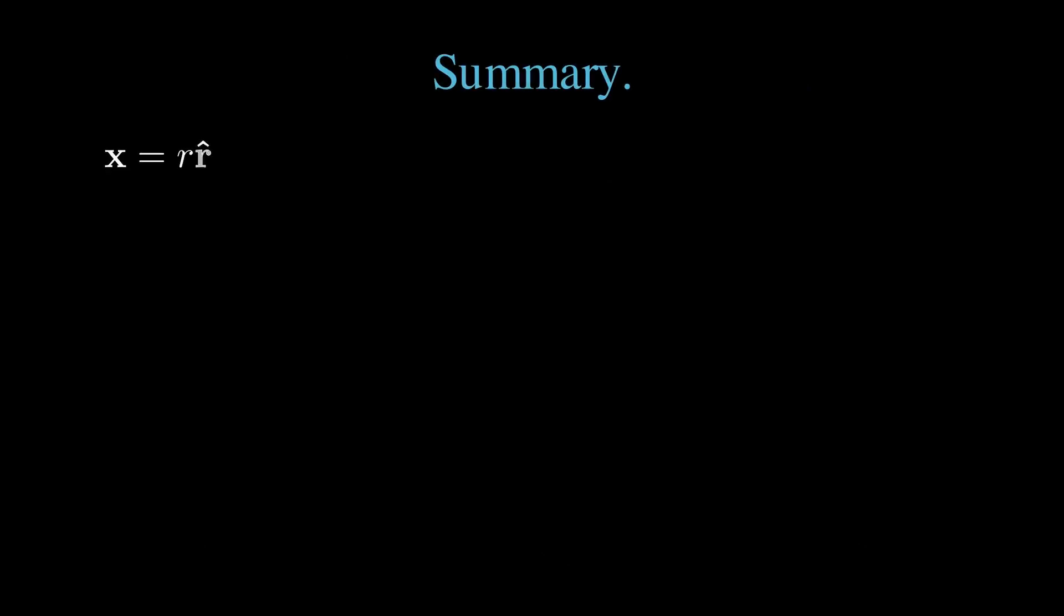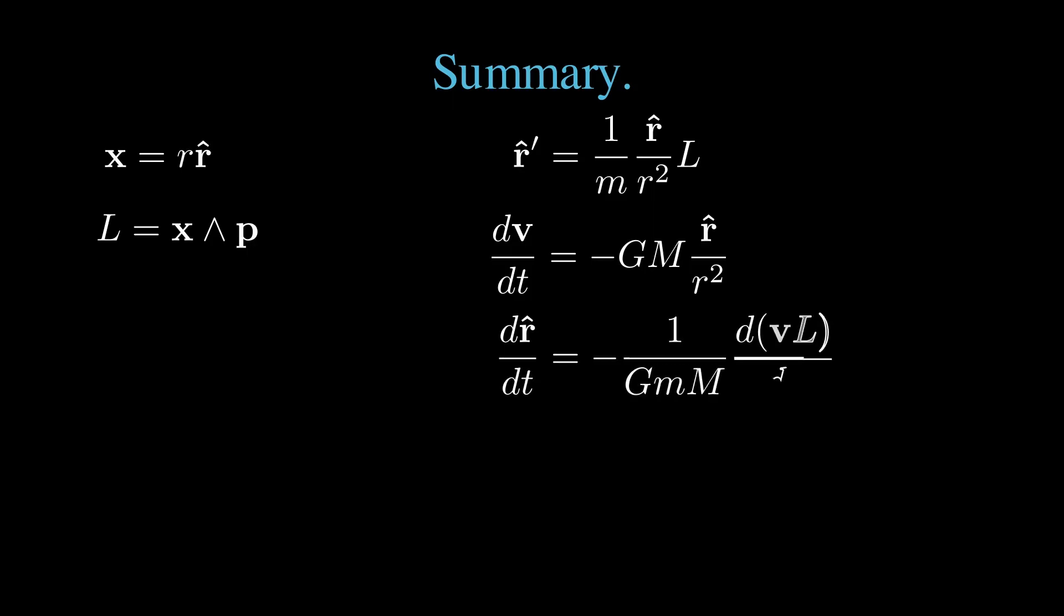To summarize, we found that r hat prime could be written as 1 over m times r hat over r squared all times l, the angular momentum. We wrote Newton's gravitational law as dv dt equals minus gm r hat over r squared, and substituted that into our r hat prime equation. We then made use of the conserved angular momentum to find a perfect differential equation of first order. We integrated that and put that into a standard conic form.